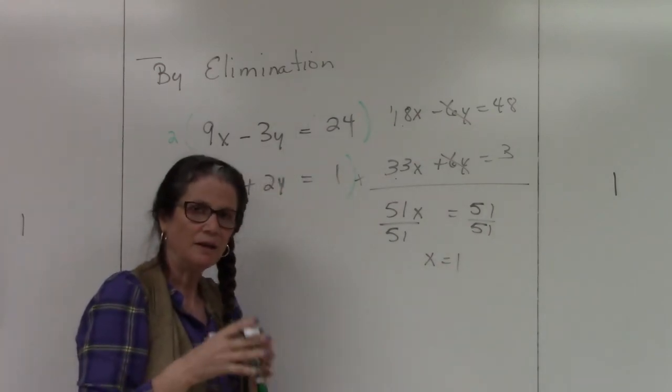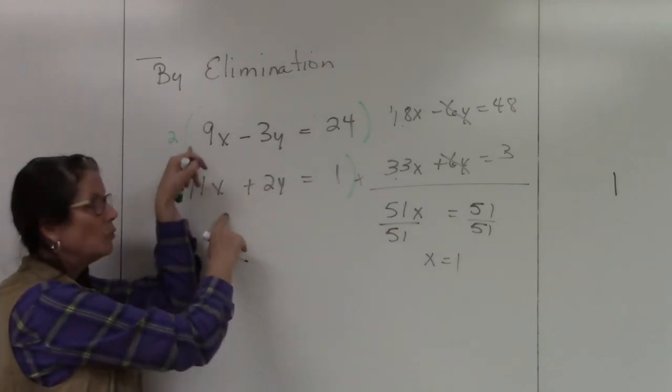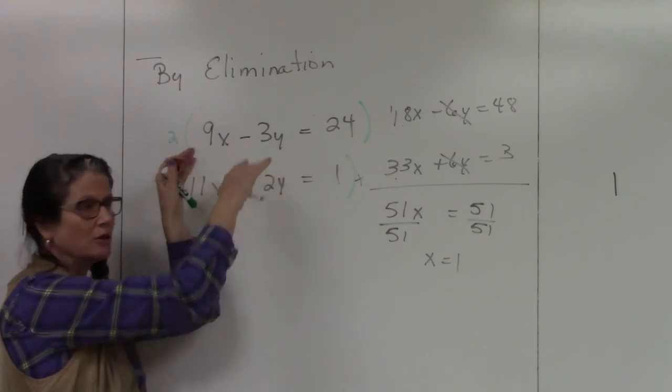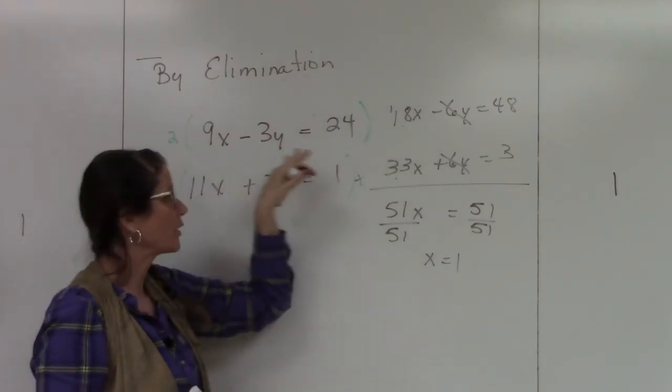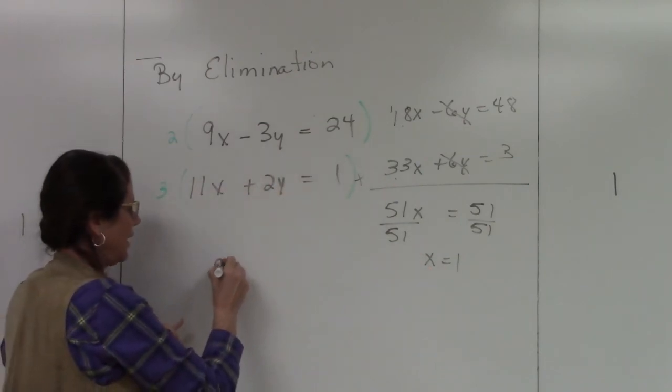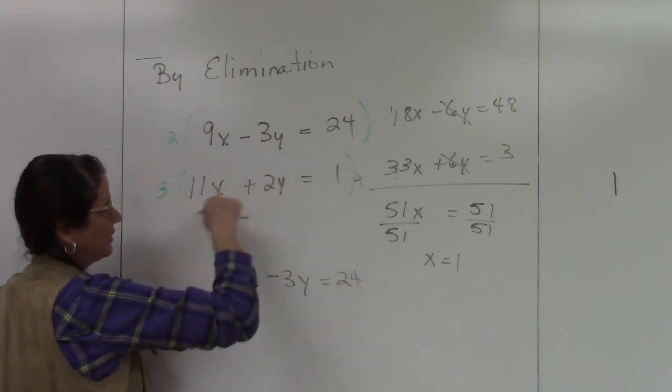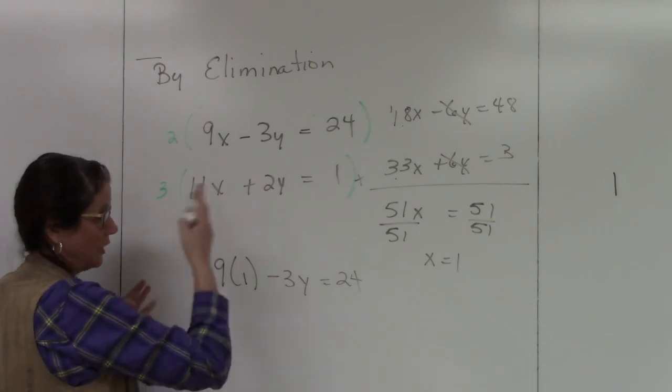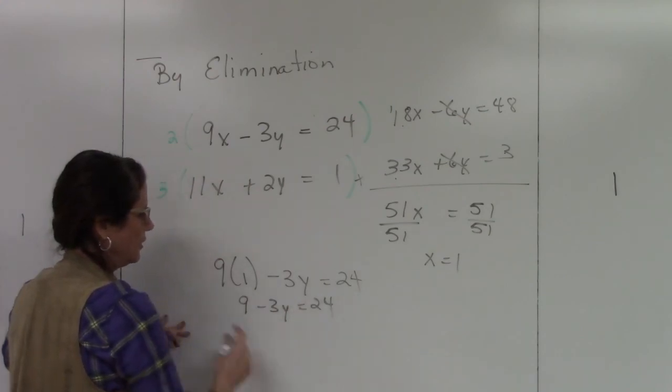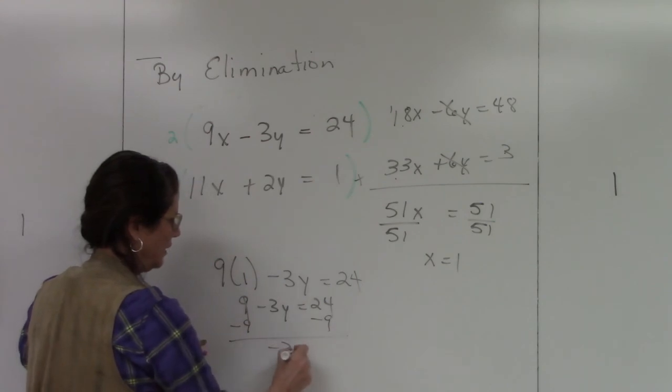Again, I'm not quite done. I still need the y value. So I'm going to plug this back into one of the originals. Always go back to the original because you know there's no mistakes here. I may have made a mistake over here, but here I know those are no mistakes. So I'm just going to take this x equals 1 and plug it back into one of the originals. And again, it does not matter which one. You could have plugged it into this one and you'd get the same answer, and I'll actually show that to you. So 9 minus 3y equals 24.